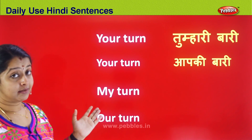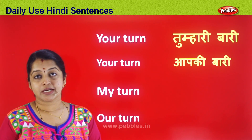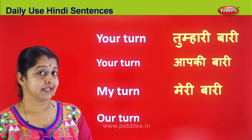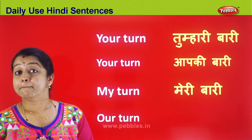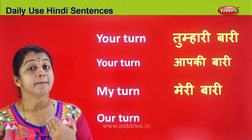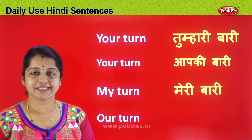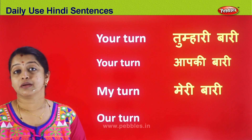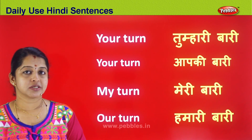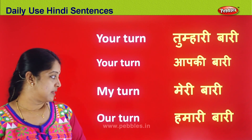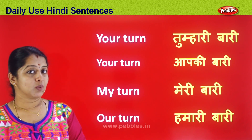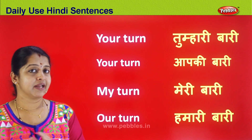Now let's look at 'my turn.' I am playing Antakshree with my friends and now it's my turn — how will I say that in Hindi? Meri Bari. My means Meri or Mera, so I say Meri Bari. Next is 'our turn.' Assume it's team A versus team B, it's your team's chance — you say Hamari Bari.